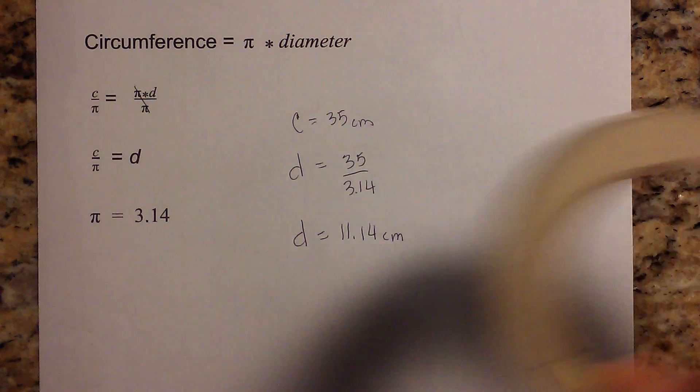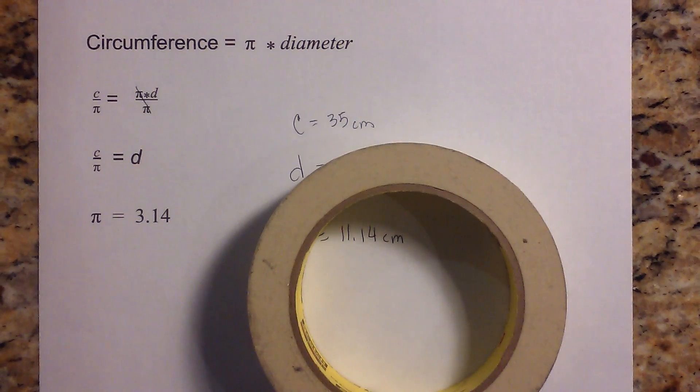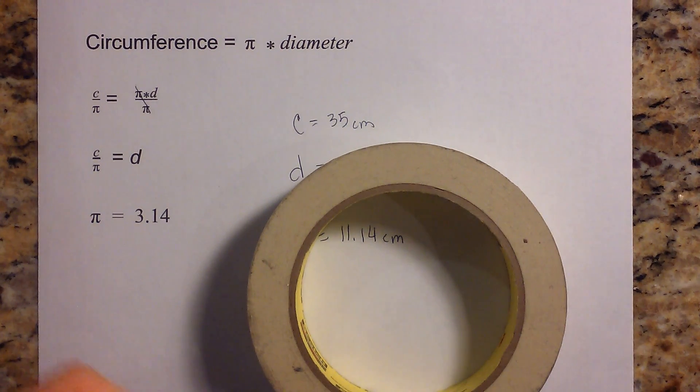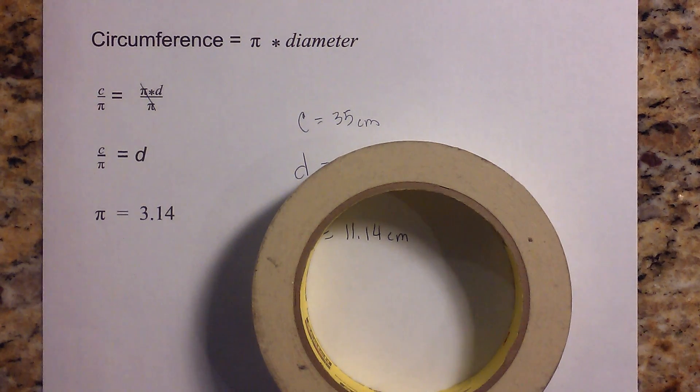So that tells you that if you go straight across with this piece of tape, which is a circle, it would be 11.14 centimeters.